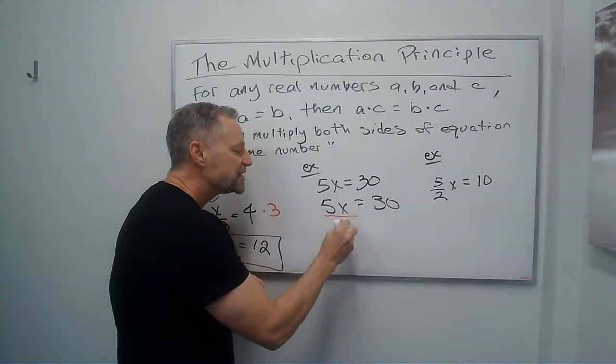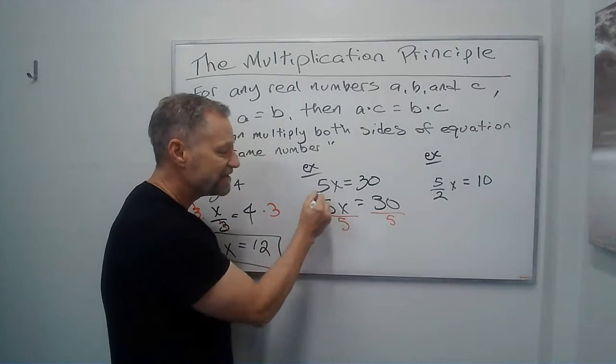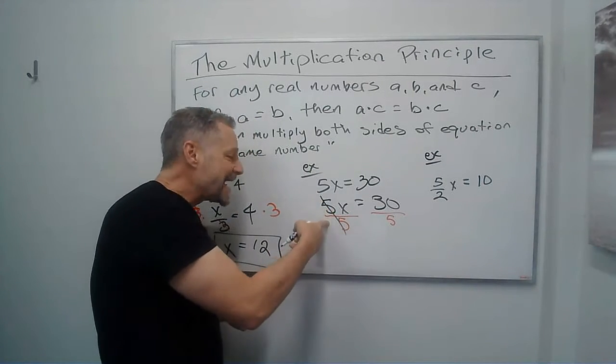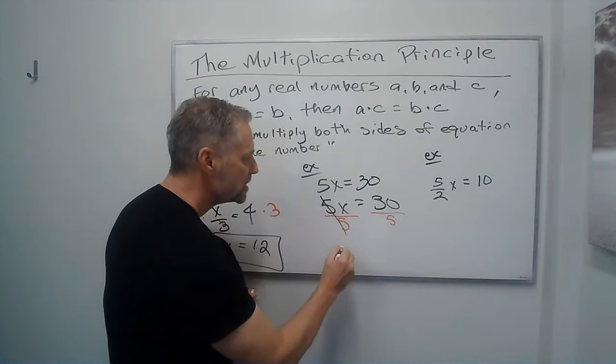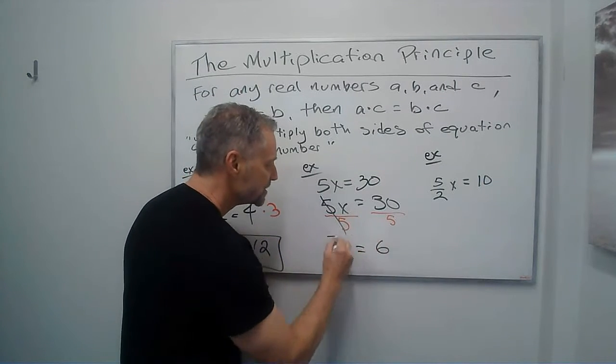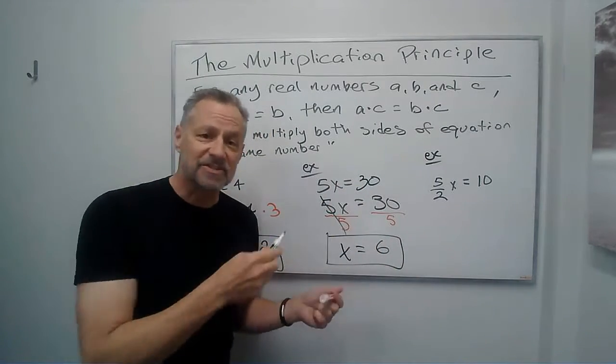That's the opposite of multiplication. And so the 5 divided by 5 is 1, that's just a 1x. I can divide this side by 5 as long as I divide that side by 5. So I get x equals 6. And again, 5 times 6 is 30. We know that checks. That's the solution.